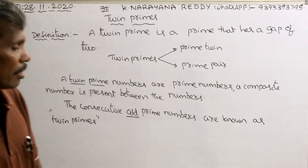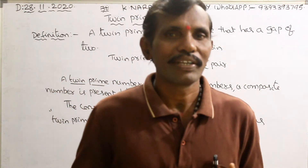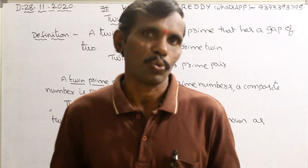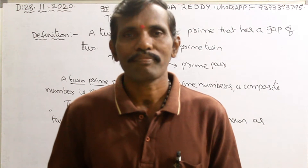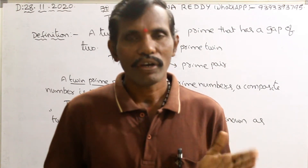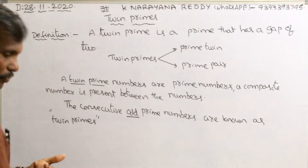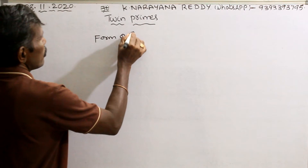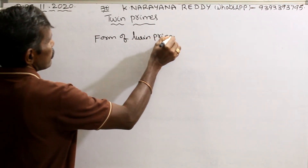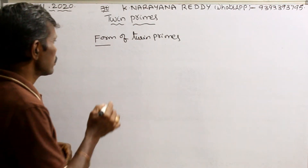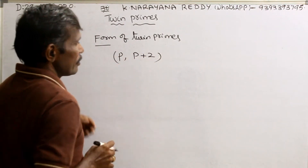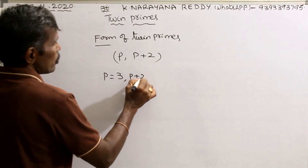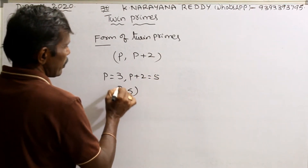So there are three different definitions for twin primes. Now, what is the form of twin primes? The form is P, P+2, where P is a prime number and P+2 is another prime number. For example, take P equals five: five plus two is seven, and seven is a prime, so five and seven is a twin prime. The form of twin primes is (P, P+2). For example, P equals three, P+2 equals five — so (3, 5) is a twin prime pair.